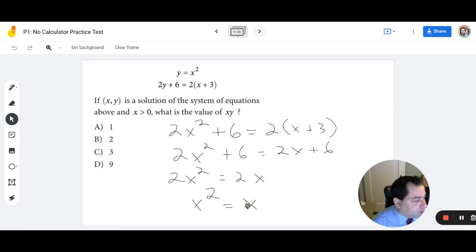Then I divide by 2 on both sides and I get x squared equals x. Well, that's a unique situation that we got here. So why don't we plug in some numbers to see what happens here? So if I start with 9, 9 squared is 81. That doesn't equal 9. 3 squared is 9. That doesn't equal 3. 2 squared is 4. That doesn't equal 2. 1 squared equals 1. So it has to be A.